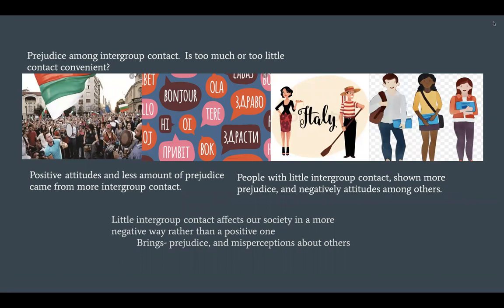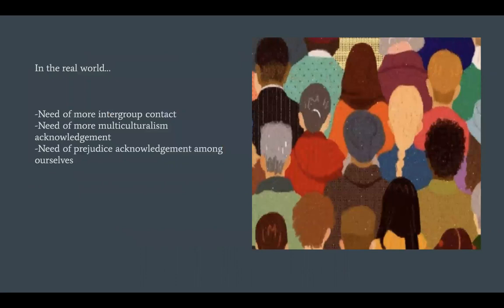According to the findings across each study in the article, people's positive attitudes towards immigrants, foreign students, and different ethnic groups came from the amount of in-group contact. People with more in-group contact were more likely to have a positive attitude and show no prejudice. However, those with little in-group contact were more likely to show negative attitudes and more prejudice. Throughout the findings, there is a need for more in-group contact among people from different parts of the world, as well as more multiculturalism acknowledgement, because we often blind ourselves with prejudice without actually practicing in-group contact.